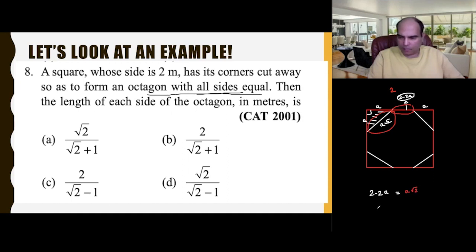The value of a will come out as 2a plus a√2 equals 2. You need to be careful while solving this, so this will take a little bit of time. The value of a is: a times (2 + √2) equals 2, so a equals 2/(2 + √2). If you divide by √2 through both numerator and denominator, the value of a will be √2/(√2 + 1).